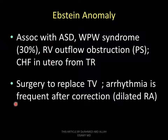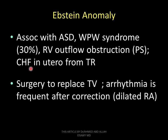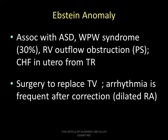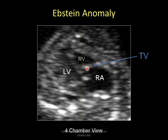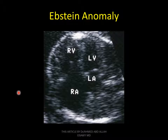Ebstein anomalies associated with ASD, WPW syndrome, 30% right ventricular outflow obstruction, pulmonary stenosis, congenital heart failure, surgery to replace tricuspid valve, arrhythmia, and free connection related to the left atrium. Ebstein anomalies: tricuspid valve insufficiency, tricuspid atresia, left ventricle — showing large left atrium with ASD and tricuspid insufficiency.